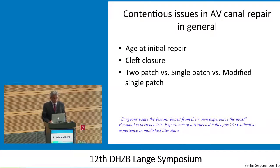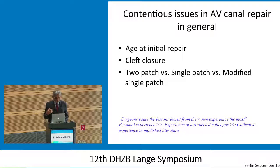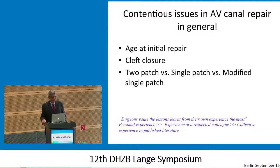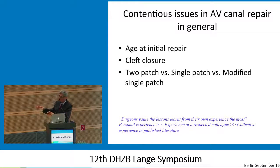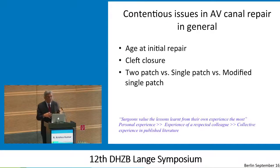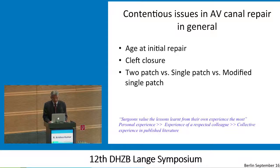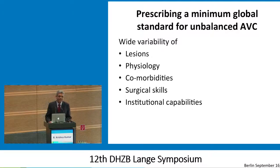There are also general contentious issues that emerged yesterday in AV canal repair. There isn't a universal agreement on age at initial repair, and there is controversy even on something thought to be pretty straightforward, like cleft closure. And two-patch versus single-patch versus modified single-patch — there is a lot of disagreement. It underscores what Pedro was mentioning: that surgeons base themselves on what they see more than anything else — their own experience first, then experience of a respected colleague, and collective experience from literature, which seems to have the least value. So there is very wide variability, and the problem really lies in prescribing a minimal global standard for unbalanced AV canal.